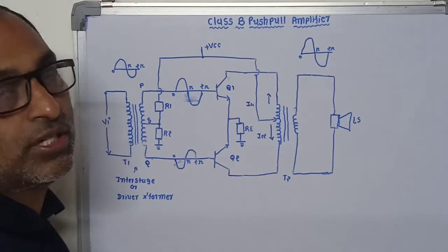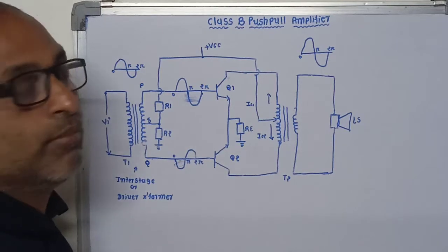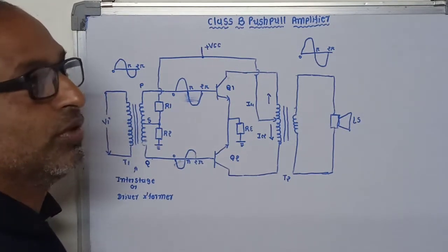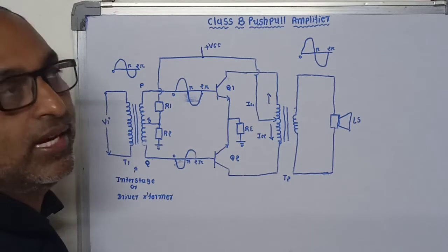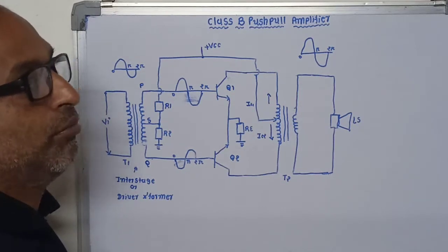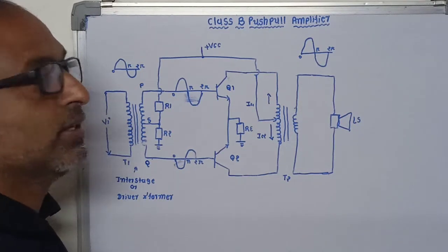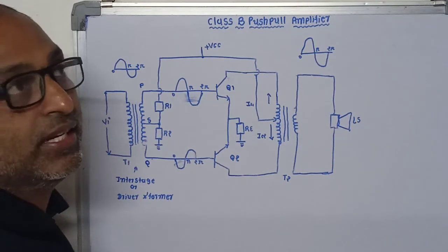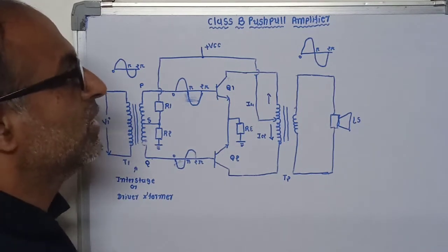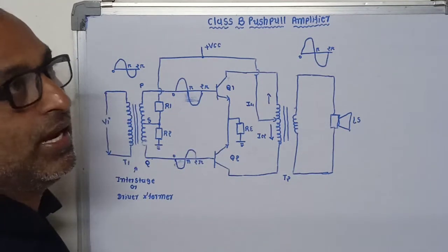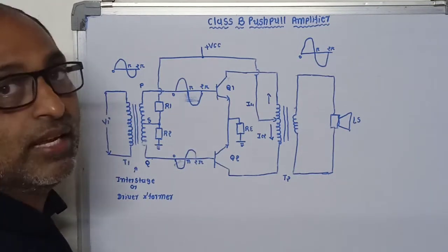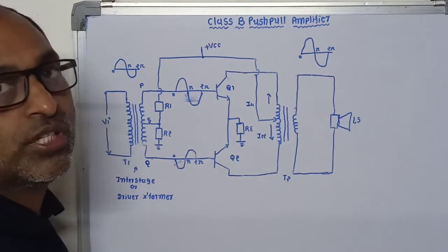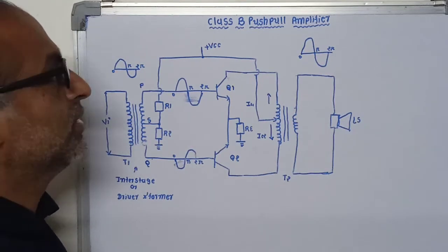For less distortion, Class A amplifier is used, but its efficiency is very less — approximately 50%. For less distortion and higher efficiency, Class B type amplifier is used, and mostly we are using Class B type amplifier. Class AB amplifier is used to reduce the crossover distortion.